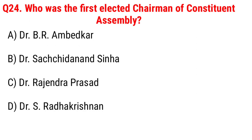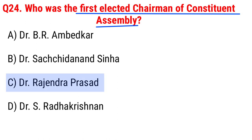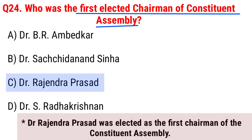Next question: who was the first elected chairman of the Constituent Assembly? Option A, Dr. Bhimrao Ambedkar; B, Dr. Sachidananda Sinha; C, Dr. Rajendra Prasad; D, Dr. Radhakrishnan. The right answer is Option C, Dr. Rajendra Prasad. Dr. Rajendra Prasad was elected as the first chairman of the Constituent Assembly.